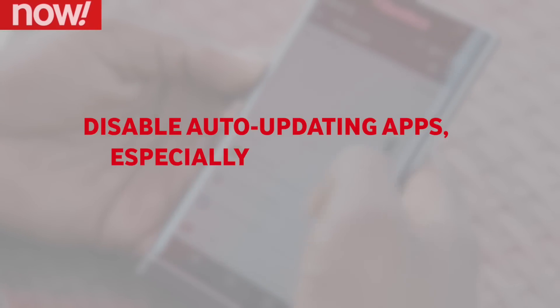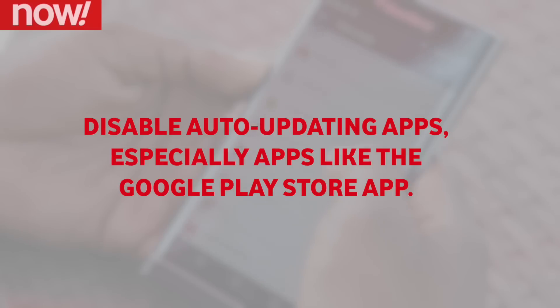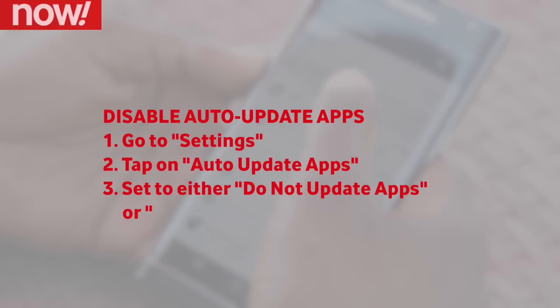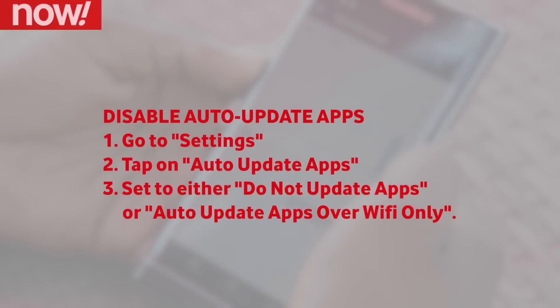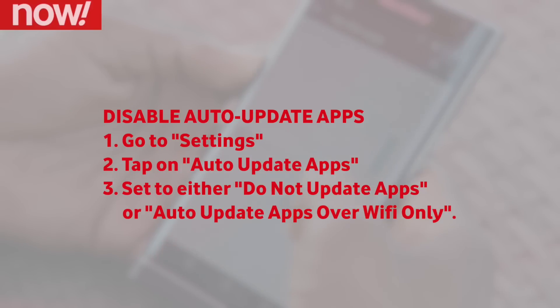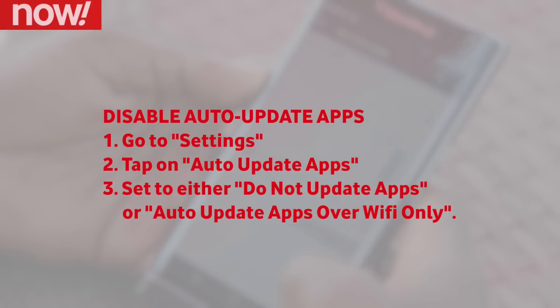Secondly, you'd want to disable auto-updating apps. If you have the Play Store set to auto-update apps, go to Settings and at the top you'll see auto-update apps. Tap this and make sure it's either set to 'Do not update apps' or 'Auto-update apps over Wi-Fi only'.